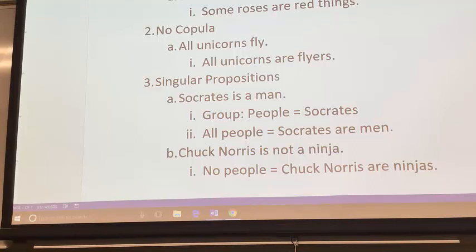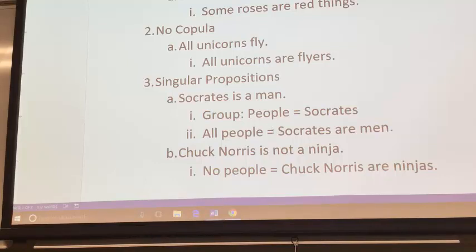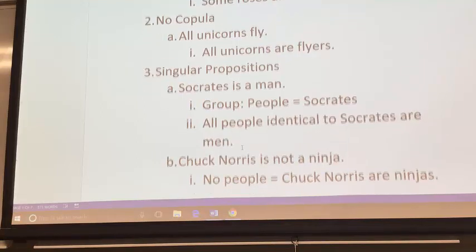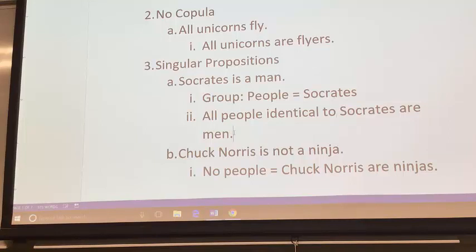We can just change Socrates into a group — the group of people who are Socrates. It's a group with only one member, a set with one member. Not people who are named Socrates, but people who are identical with that Socrates. So just make the group people identical with Socrates, and you get these strange-sounding sentences: 'All people identical to Socrates are men' — abbreviated with an equal sign. You can treat that as an A statement.